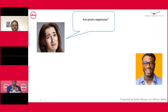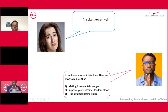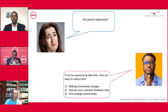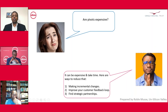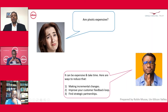Pivots are not free — they can take time and cost money, but there are ways to reduce this. You can make incremental changes; if you figure out you need to make a significant diversion from your current business model, you don't need to make the entire change immediately — you can make it incrementally and continue to benefit from the economic benefits as you gradually pivot. It is also important to improve your customer feedback loop so you're constantly getting feedback from your customers. Another way is to find strategic partners — for example, if you need to start offering your service on an e-commerce platform, you could find a strategic partner that already has that infrastructure.